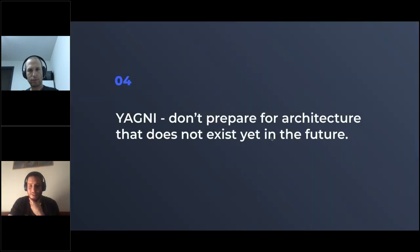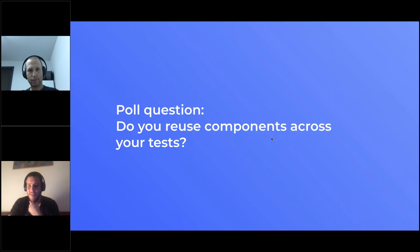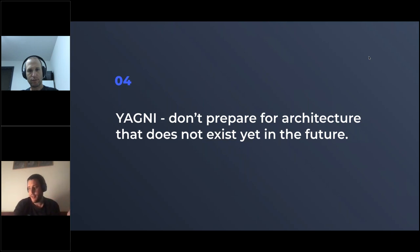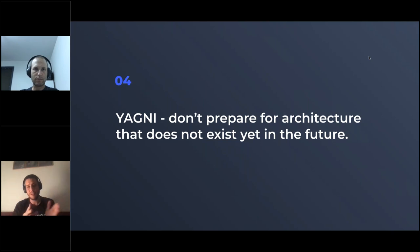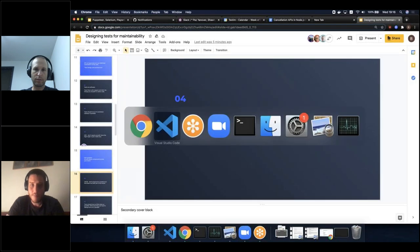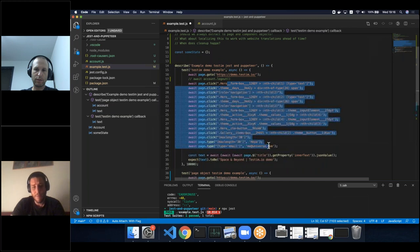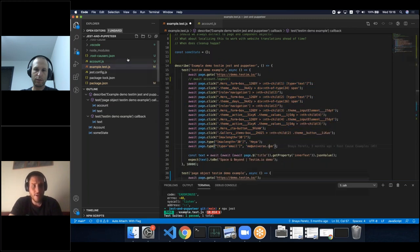Number four is YAGNI — the opposite of don't repeat yourself. It's basically: don't prepare for a future that's never going to happen. We've all seen a project where someone says 'maybe we'll add German translation next year,' and you end up with all these layers of indirection between your code and test code. So I'm going to put the login in a page object — class Account with a login method. Then I say, 'what if the selectors change with localization?' and I add a config file.